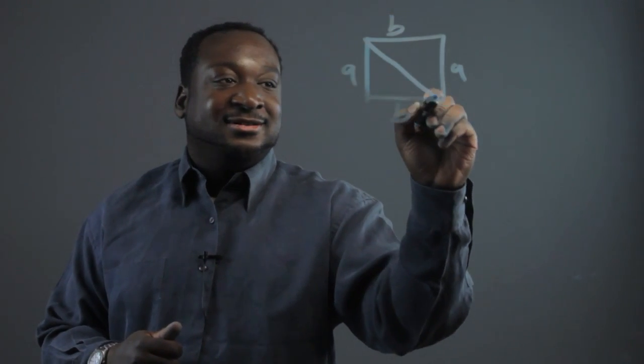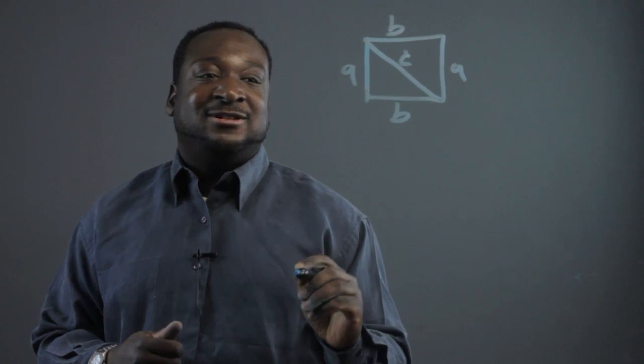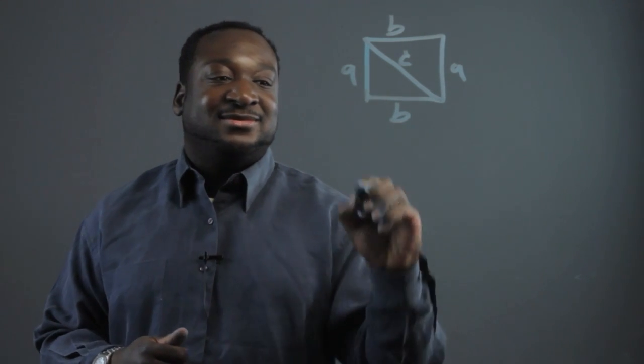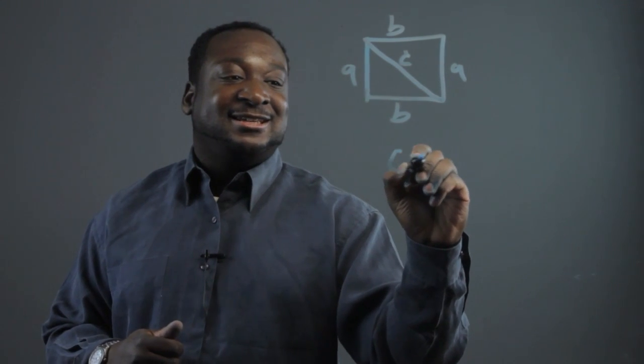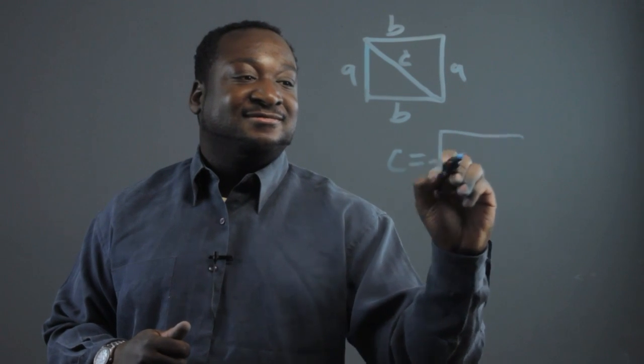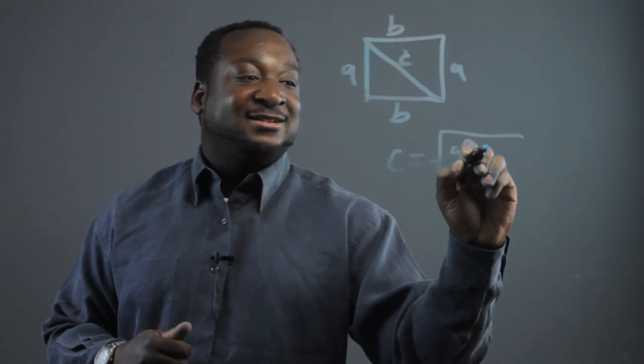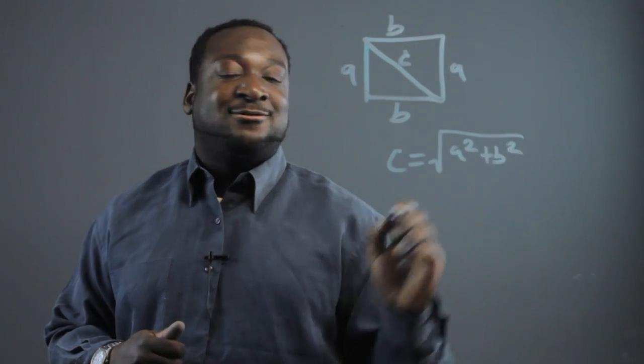Now to get the diagonal C, we would use the Pythagorean theorem which states that C equals the square root of a squared plus b squared.